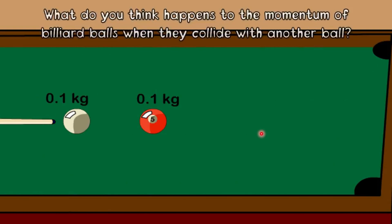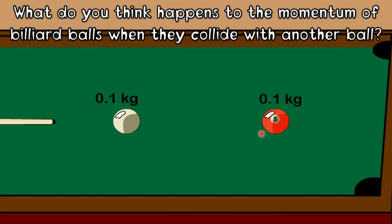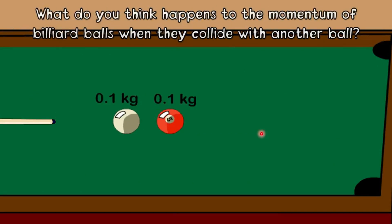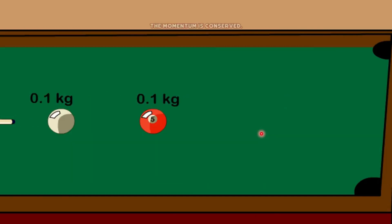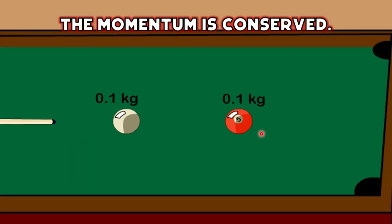What do you think happens to the momentum of billiard balls when they collide with another ball? Is there a gain or loss of momentum? If your answer is no, then you are correct. The momentum of the billiard balls is conserved.